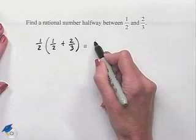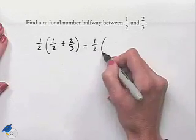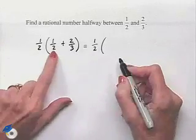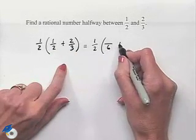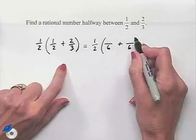To accomplish this, we need to have a common denominator. We can see that the common denominator between two and three would be six. So we're going to take each fraction and write it as a fraction with a denominator of six.